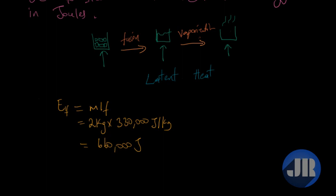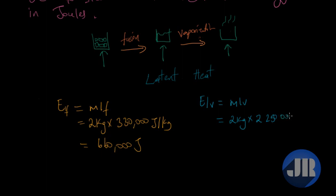Now for the latent heat of vaporization. The formula is: E_lv = m × Lv, where m is the mass — again 2 kilograms — and the latent heat of vaporization of steam is 2,250,000 joules per kilogram. Multiplying gives us 4,500,000 joules.